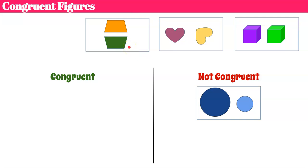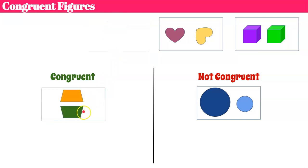Now let's talk about the trapezoids. The green one is flipped — if you think about it flipping or folding over, or you could have turned it and moved it. We're going to put these in the congruent category because the orientation is different, but if I turned the green one around or flipped it over, it would perfectly fit on top of the orange trapezoid. They have the same shape and they are the same size.